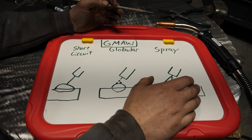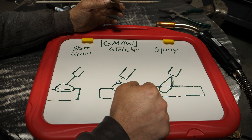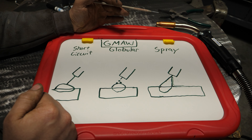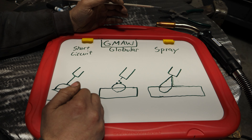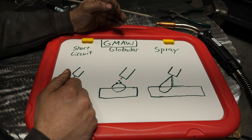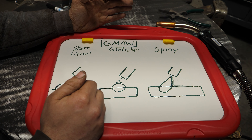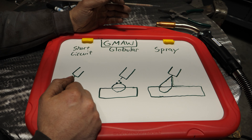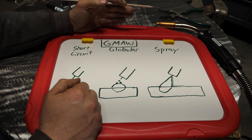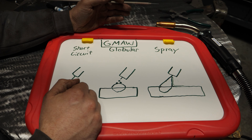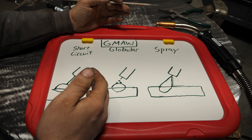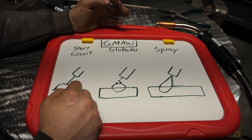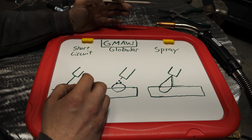Spray welding is more or less very high values in wire feed and voltage. Now, I get a lot of heat on this channel for calling MIG welding MIG, or short circuit, or short arc. The truth is I look at it like this: I'm not an engineer and I specify by street terms, just because us at home that's what we use. So you're going to universally hear me call short circuit wire welding as short circuit, short arc, or MIG — just flat out MIG.